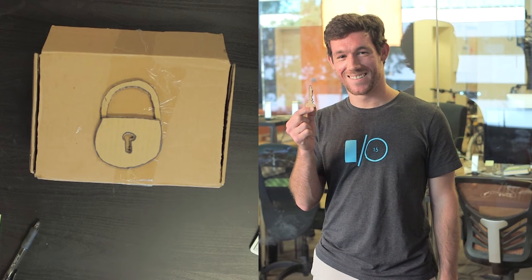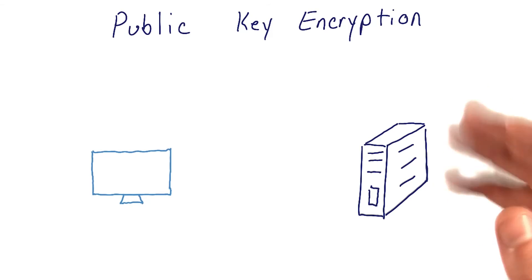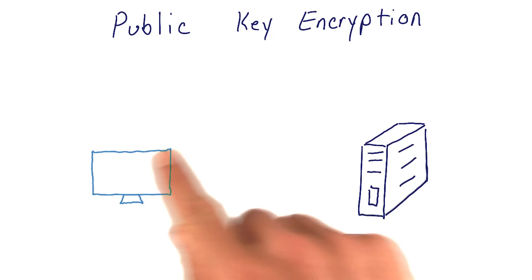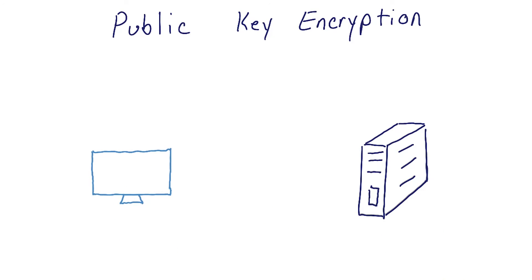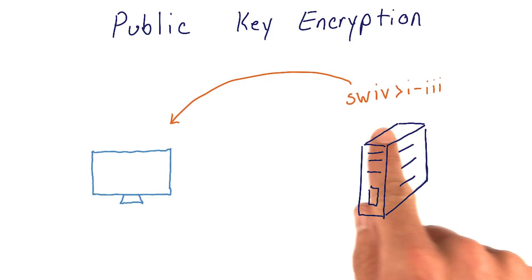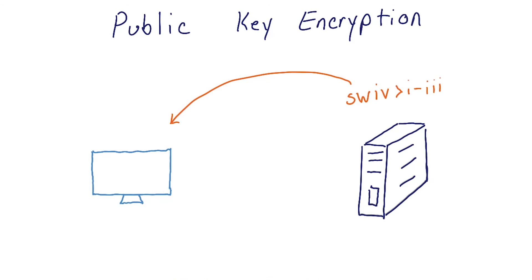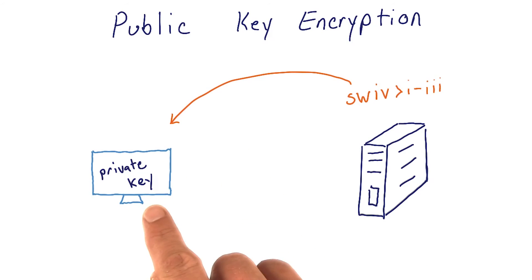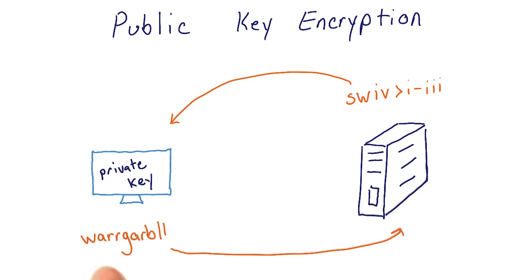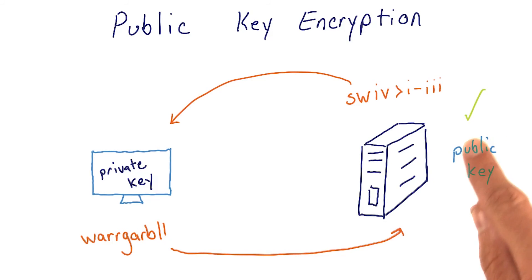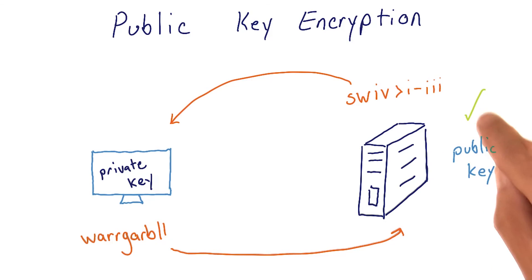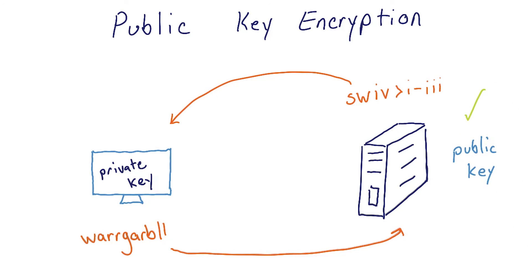This combination of public and private keys allows me to securely communicate with Cameron. This same cryptography trick can be used to authenticate a client with a server. The server will send a random message to the client. The client will encrypt that message with their private key, and then send that encrypted message back to the server. The server will decrypt this message with their public key, and if that value equals the same value they sent, then everything checks out and the client has authenticated.